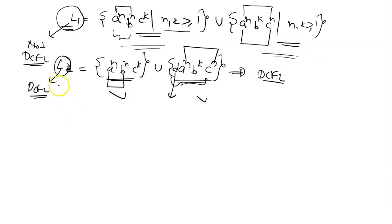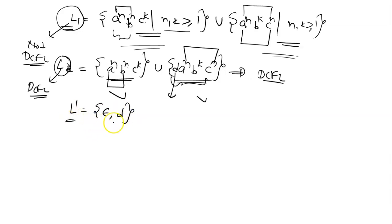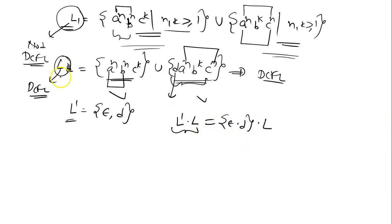Now consider another language L' = {ε, d}. This is a very simple finite language with only two strings: the empty string and d. Now consider the concatenation L' · L. This is basically {ε, d} · L, where L is a^n b^n c^k union d a^n b^k c^n.